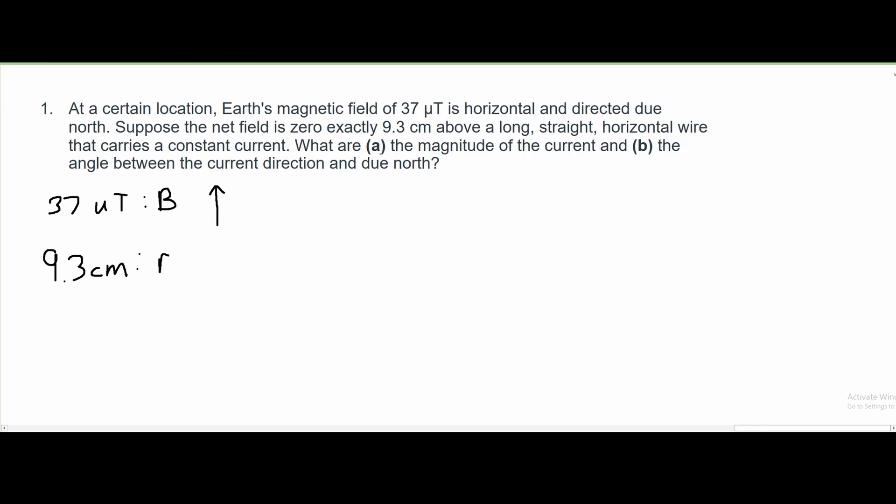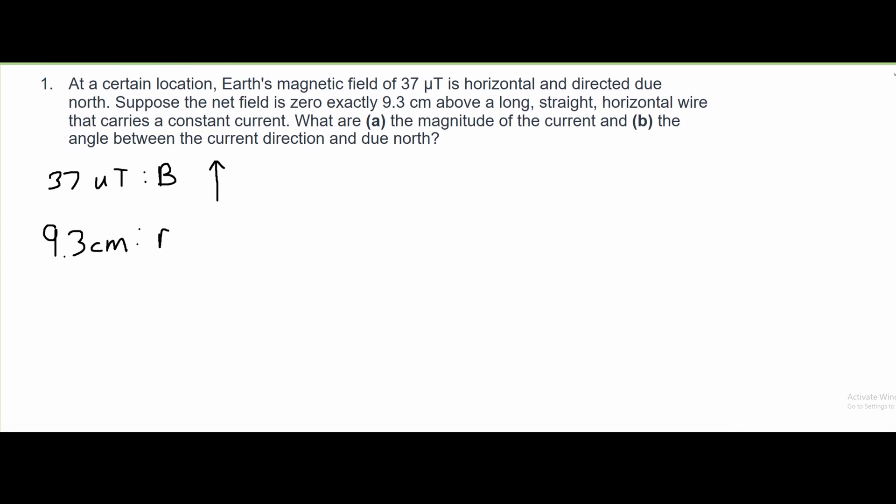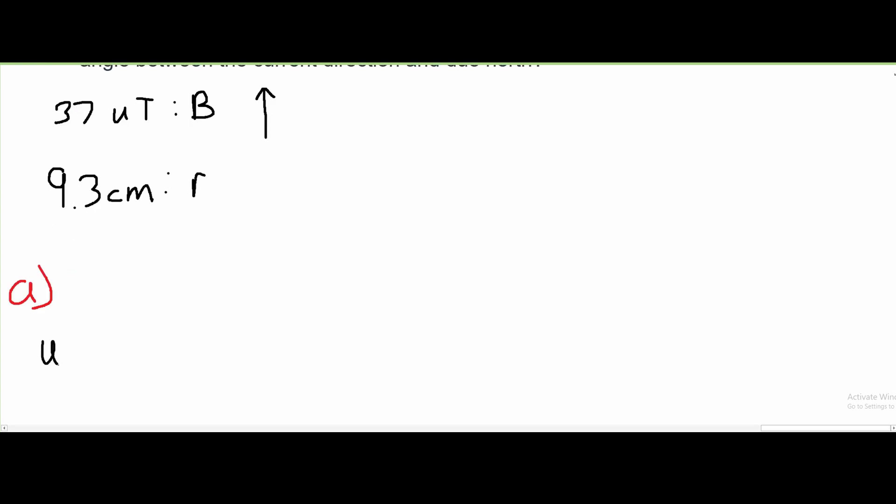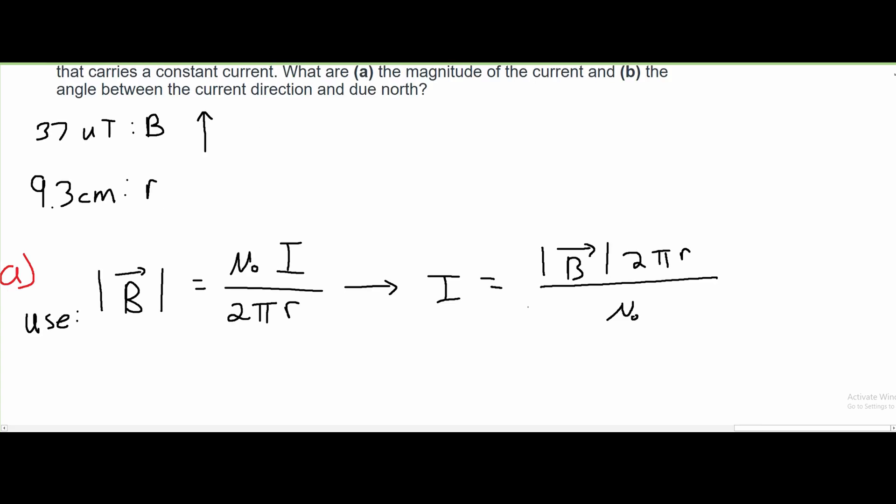For part A, we're asked to find the magnitude of the current. In here, we are going to use the formula for magnetic field, and that is the absolute value of B is equal to U naught times the current I divided by 2 pi R. After we rearrange our formula, it is going to look like this.